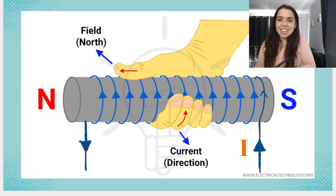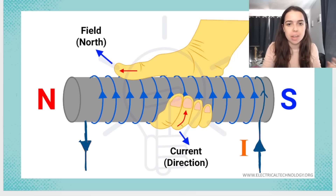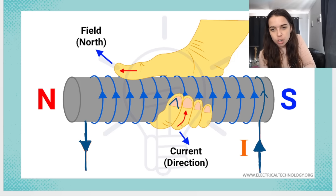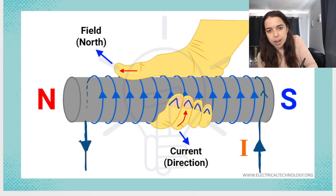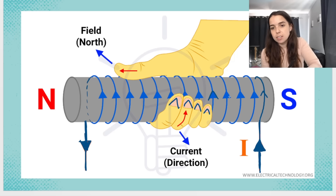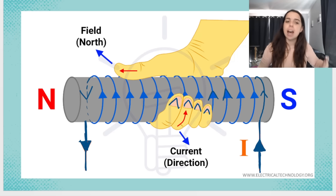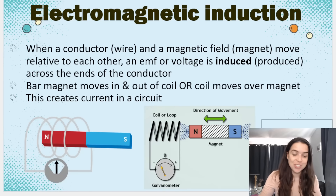Here's a much better picture showing the right hand rule for a solenoid. The thumb points towards the north, and the fingers curl in the direction of the current — up the front, down the back. In the next video we're going to be looking at electromagnetic induction, which is super important to this topic. I'll see you in the next video — bye everyone, subscribe for more!